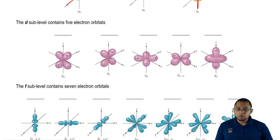The D sublevel has five electron orbitals, each one can hold two, so the D sublevel can hold a maximum of ten electrons.